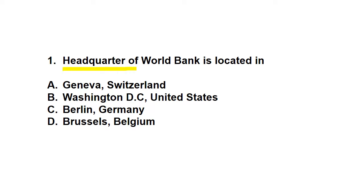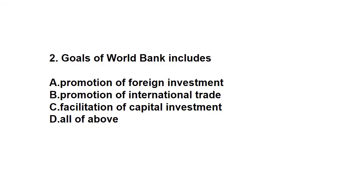The first question is: the headquarter of the World Bank is located in? The headquarter of the World Bank is located in Washington DC — that is Washington District of Columbia, United States. Not only that, the World Bank and IMF share the same headquarter; IMF is also headquartered at Washington DC.